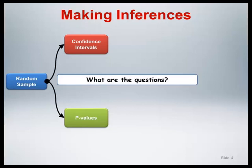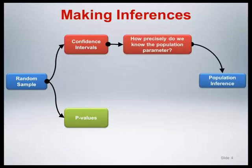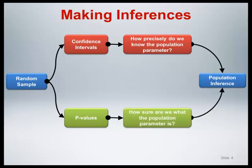What are the questions being addressed by each of these approaches? The confidence interval addresses the question: how precisely do we know the population parameter? This approach provides an interval of values that we believe brackets the true population value with a specified level of confidence. The p-value addresses a subtly different question: how sure are we what the population parameter is? Implicit in this question is an assumption about the population value that we will discuss in a moment.